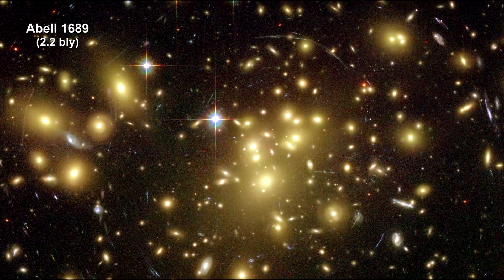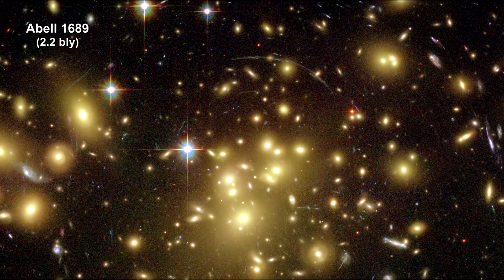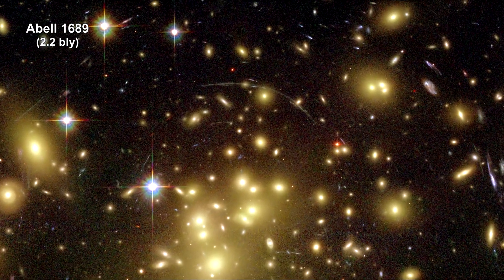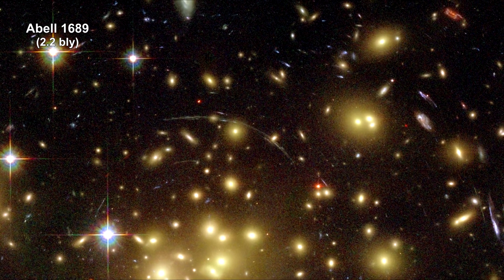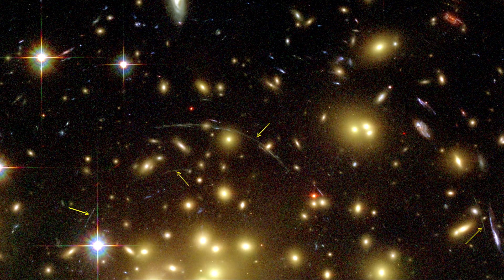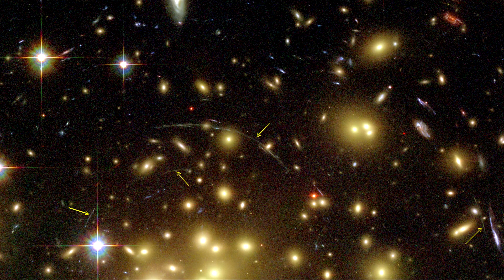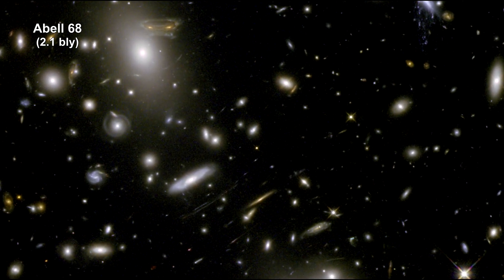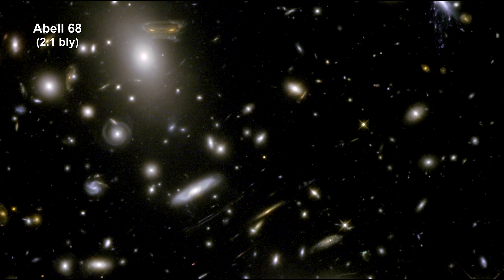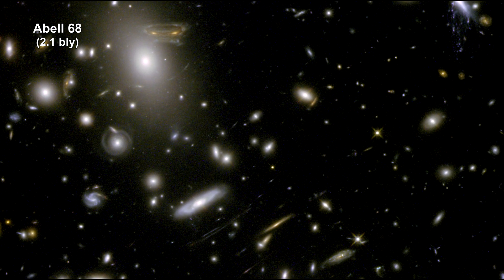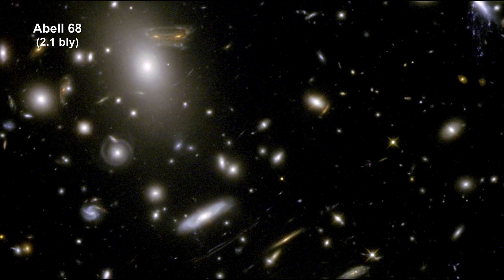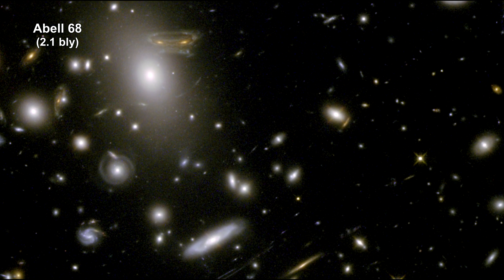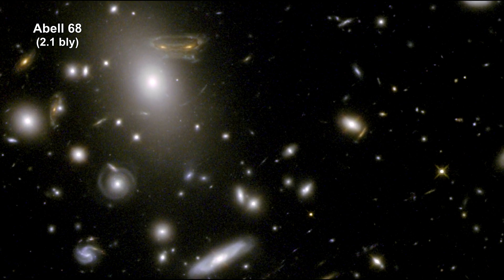This is Abel 1689, 2.2 billion light years away. It's one of the most massive galaxy clusters known. Its gravity acts like a 2 million light year wide lens in space. Here again we see how the gravitational field surrounding this massive cluster of galaxies acts as a natural lens in space to brighten and magnify the light coming from very distant background galaxies.